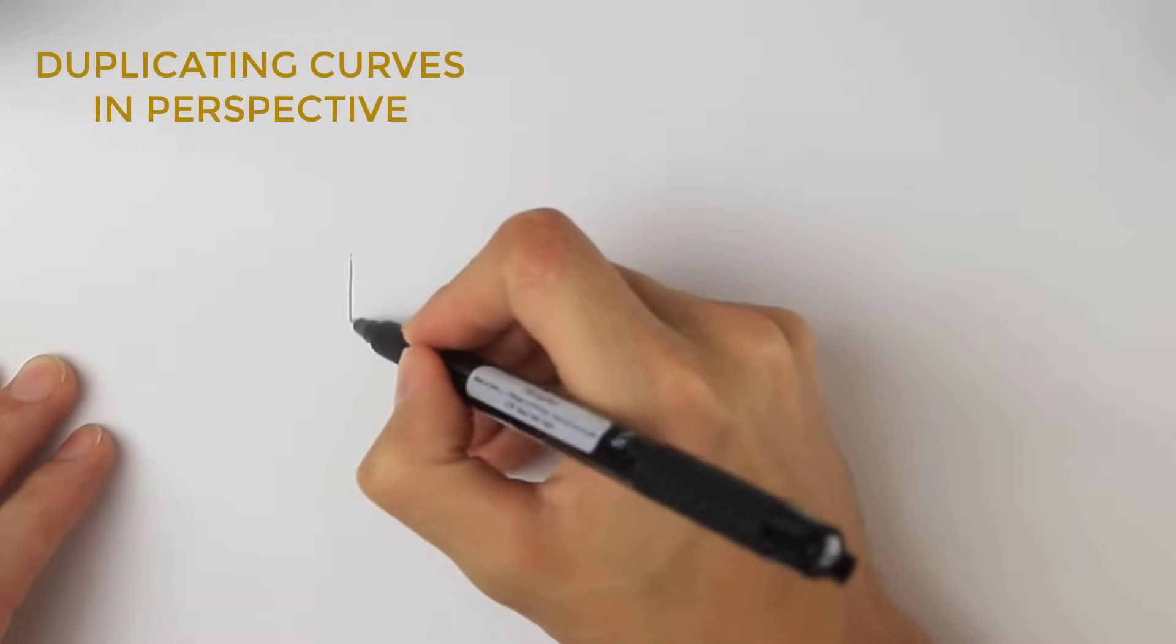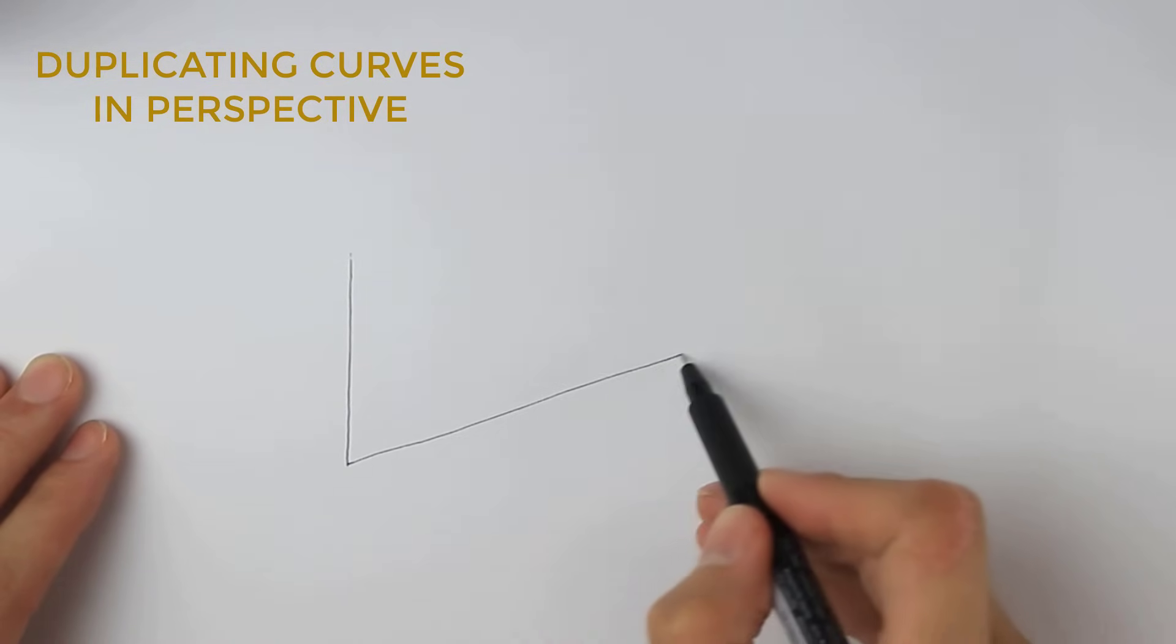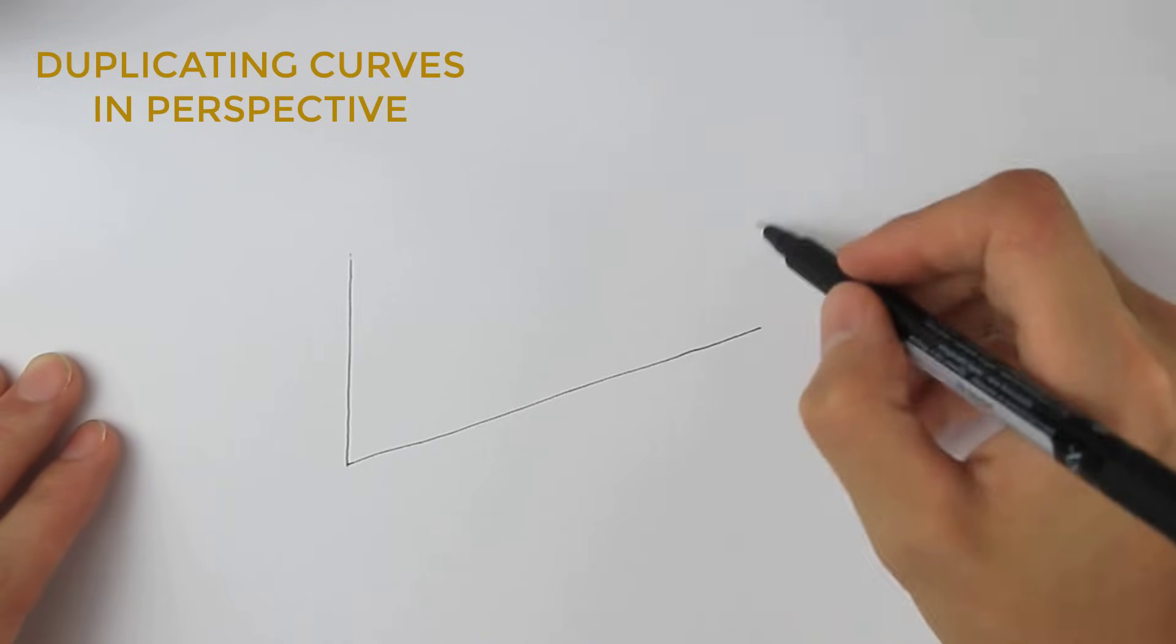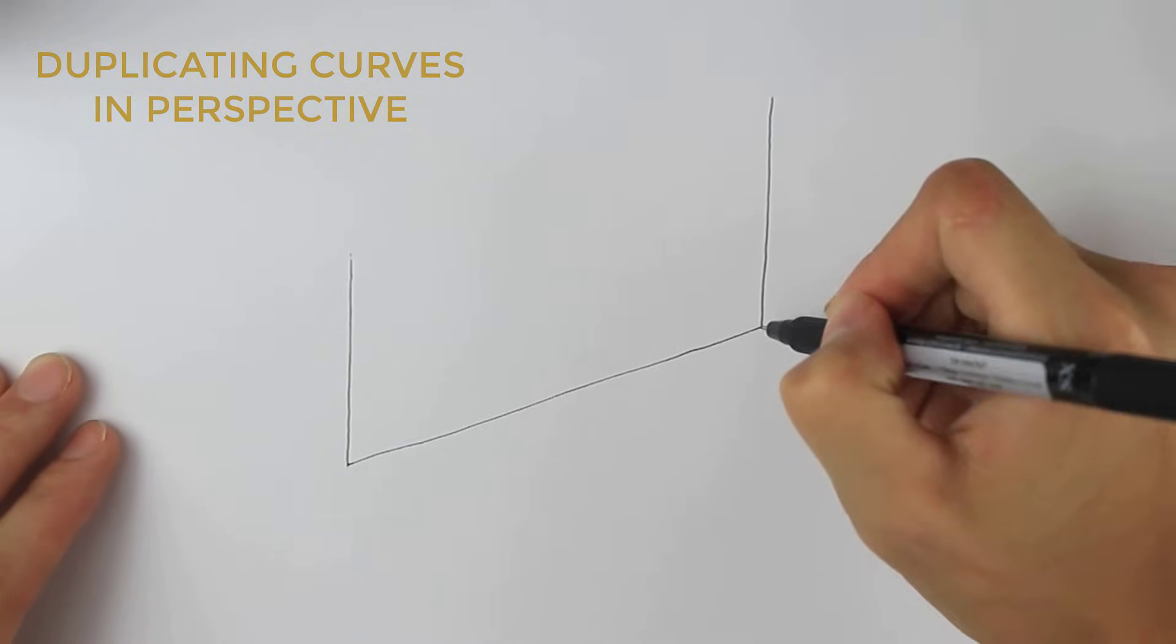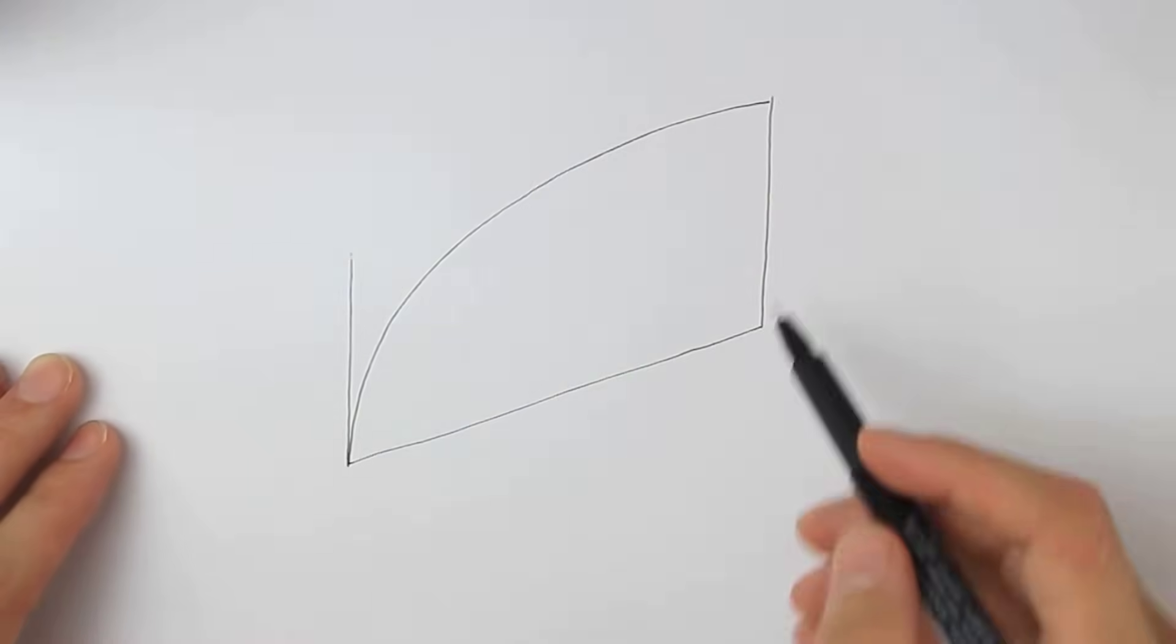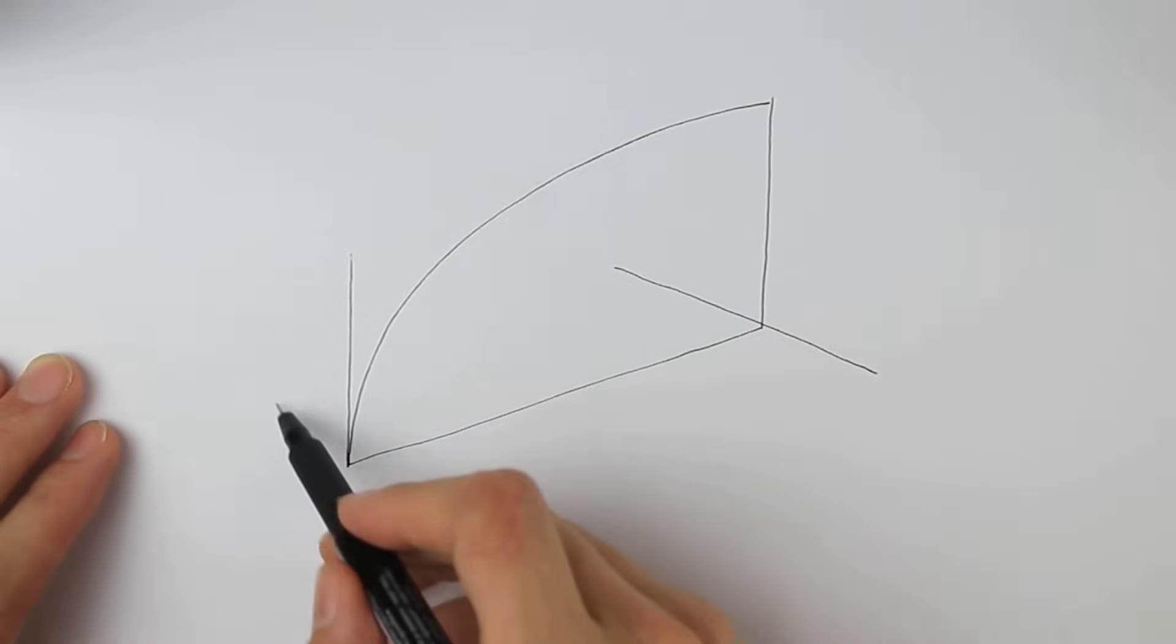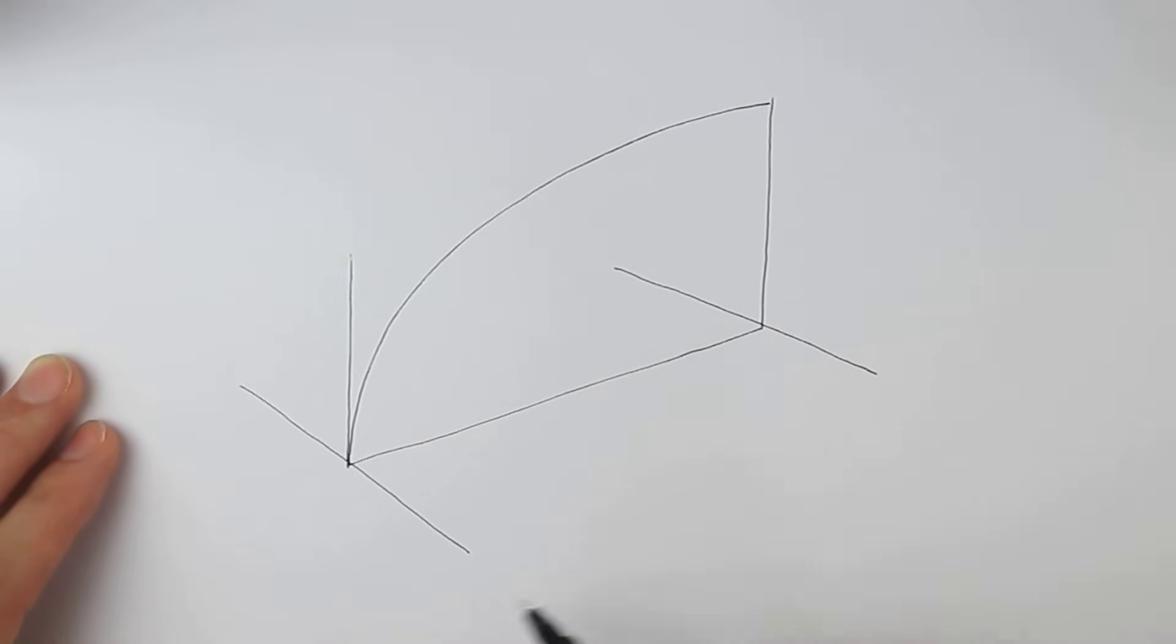This is going to be the hardest technique in the entire tutorial. I start by establishing our ground plane and adding some vertical lines. I create a curve that's going to act as our center line. Imagine as though we've taken a cross section or a slice through something. With our center line established, I create lines heading towards the left vanishing point. I establish the width of the curve by now creating a second line towards that right vanishing point.